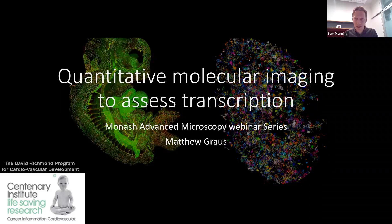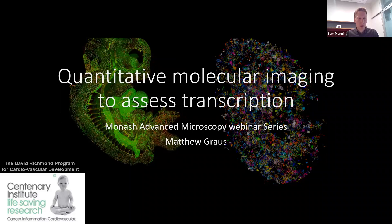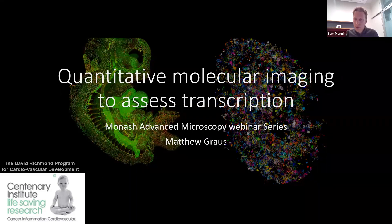I'll give a bit of background on Matthew's career. He did his PhD in nanoscience and microsystems engineering at the University of New Mexico, then moved on to do graduate research investigating host-pathogen interactions between dendritic cells and pathogenic fungus using super-res microscopy. He then moved to the Gauss Laboratory at UNSW in 2018 to study T cell receptor activation, and in 2020 joined the David Richmond Programme of Cardiovascular Development, studying gene regulation and editing, headed by Associate Professor Matthias Francois. Thanks very much for joining us, Matthew.